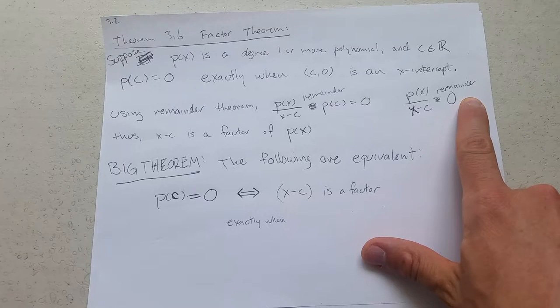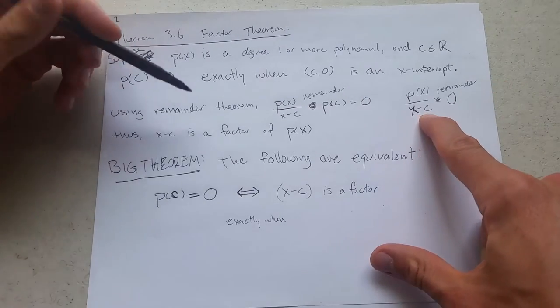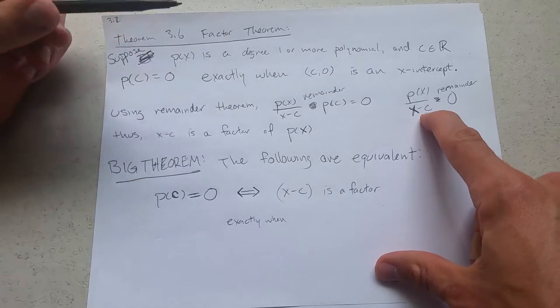When you could either have made a mistake in your division or you're dividing by something that's not a factor. So if you get a remainder zero, x minus c will be a factor of p of x.